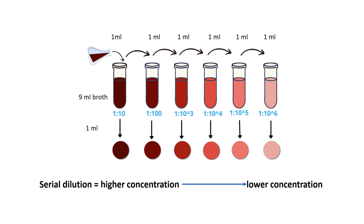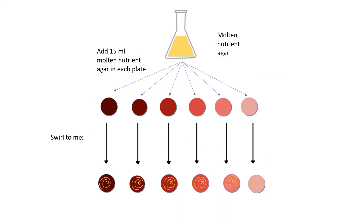Repeat this process until the dilution reaches 1 to 10 to the power of 6. From the first tube, take 1 ml of liquid and pipette it into a sterile petri dish. From each subsequent tube, take out 1 ml of liquid and transfer it into a separate sterile petri dish. Do this step for all the tubes.